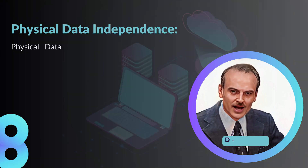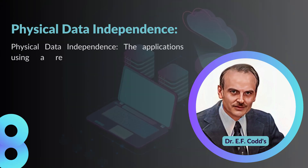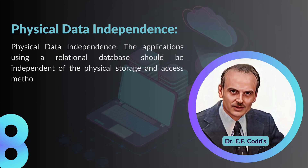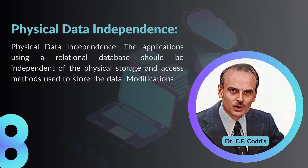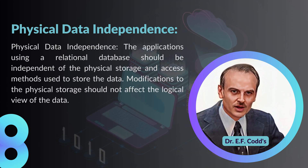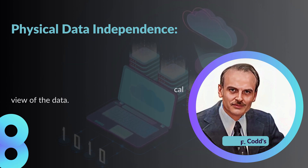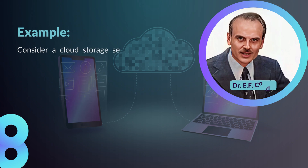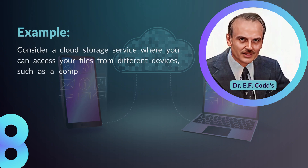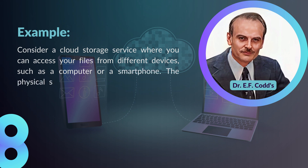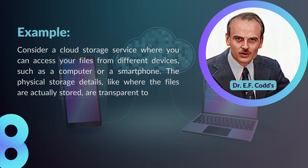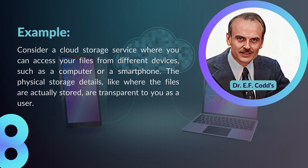Rule number eight: Physical Data Independence. The applications using a relational database should be independent of the physical storage and access methods used to store the data. Modifications to the physical storage should not affect the logical view of the data. For example, consider a cloud storage service where you can access your files from different devices such as a computer or a smartphone — the physical storage details, like where the files are actually stored, are transparent to you as a user.